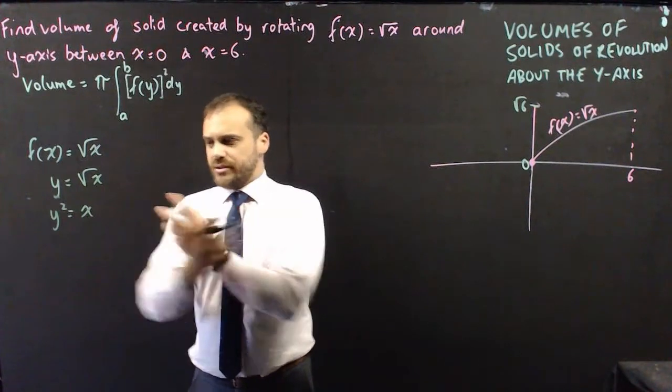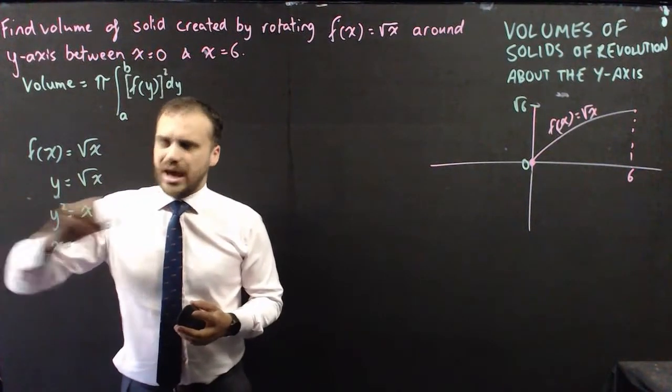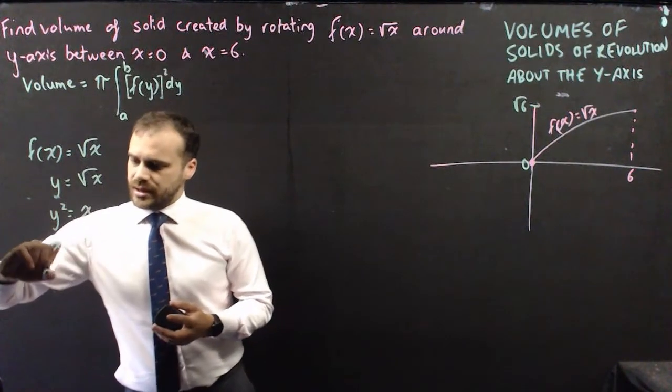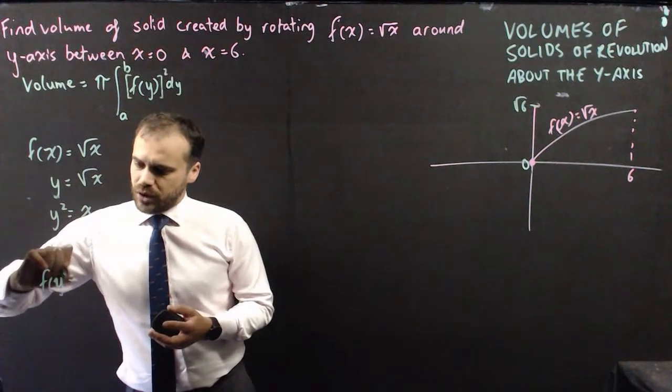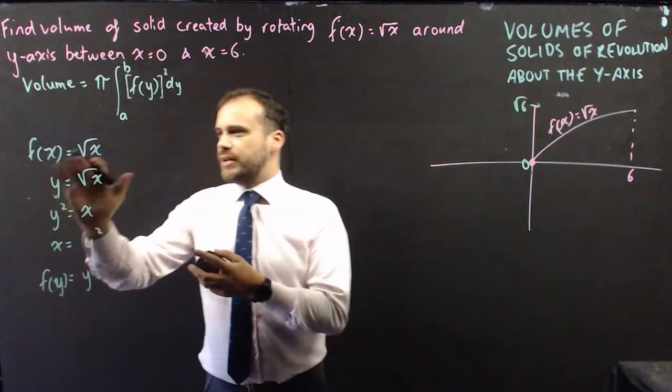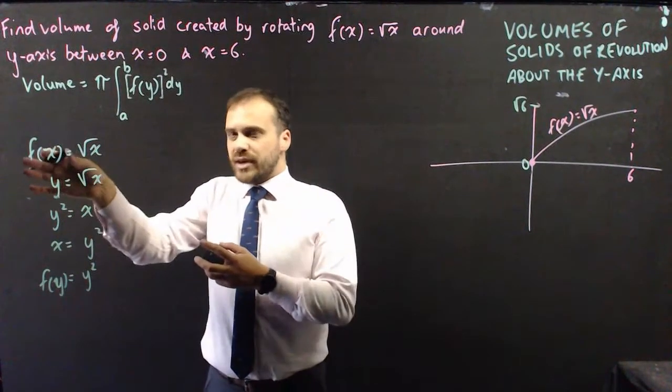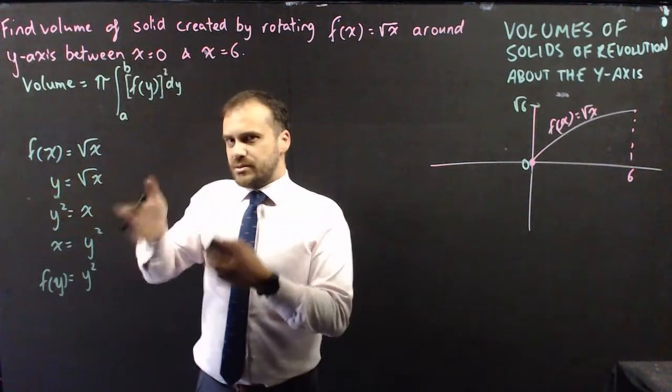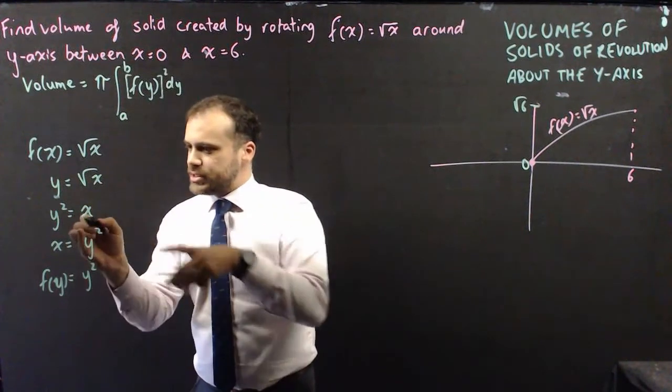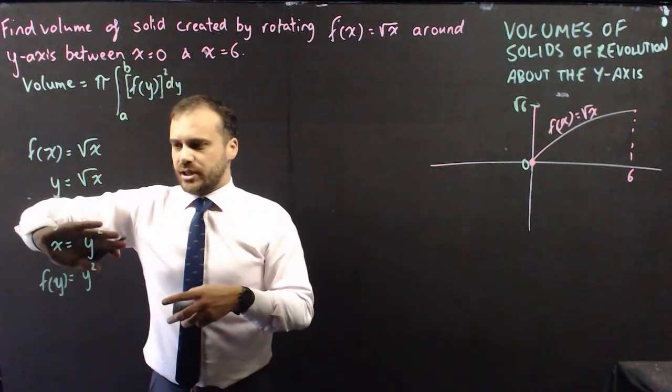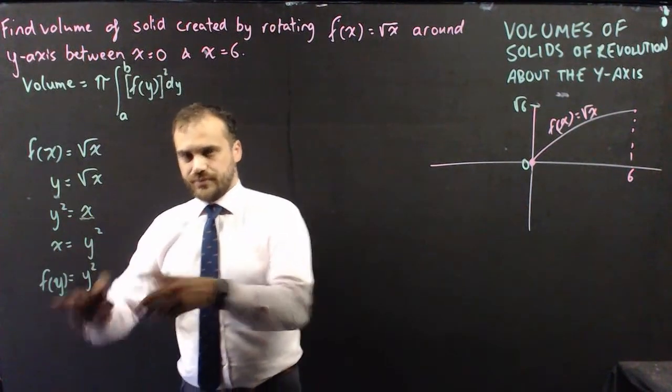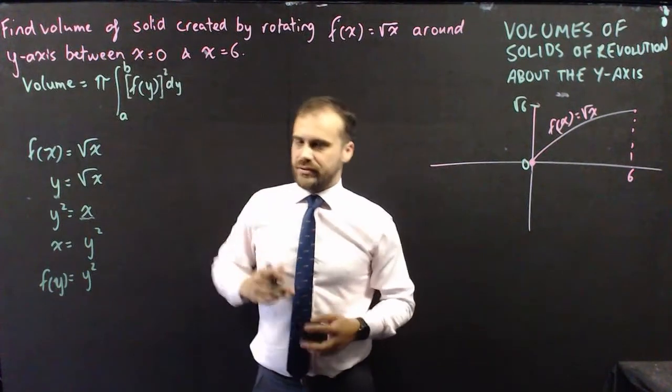Now, I just might write that the other way around, just so I can really show you, hammer home what's happening here. x equals y squared, and now we can say that f(y) equals y squared. Take a look at what's happening here. f(x) equals root x. Function of x kind of means y, means y axis. y equals root x. And then I rearrange this to isolate x. I'm really finished there. I can just write f(y) equals y squared, which is what I'm doing here. So we're just flipping it around, isolating x, and that'll give us our function of y.